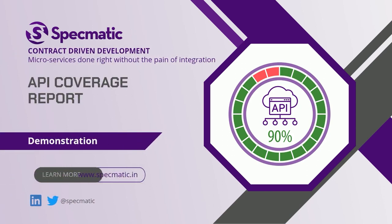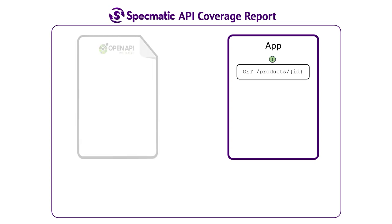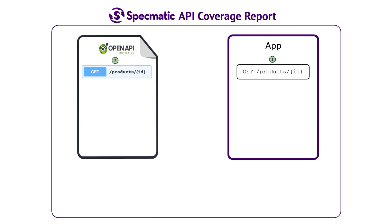In this video we'll show you how to generate an API coverage report. Let's say we have an application which has a route GET products by ID. We also have an OpenAPI specification in which this route is documented. Specmatic can leverage this OpenAPI specification as an executable contract and run contract tests against the application.